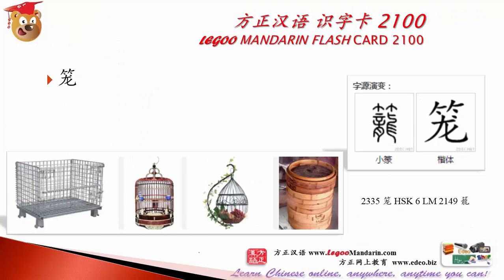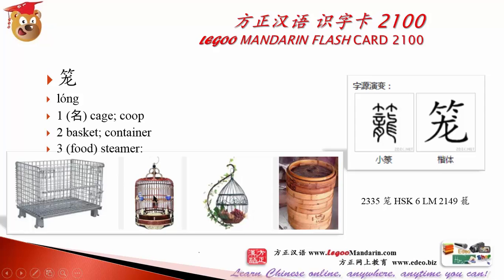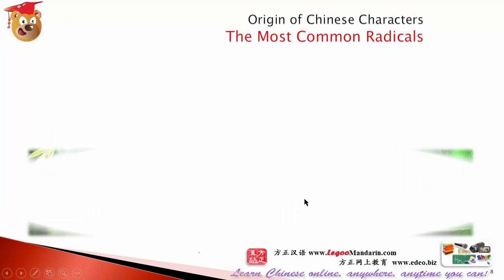Long. Here is the phonetic part. The top is bamboo and the bottom reads as long. So together the whole character reads as long — a cage or container made from bamboo. It is a basket or steamer. Long — bamboo.